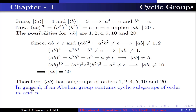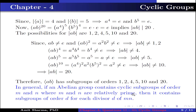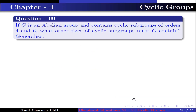In general, if an abelian group contains cyclic subgroups of order M and N, where M and N are relatively prime, then it contains a subgroup of order D for each divisor D of MN.